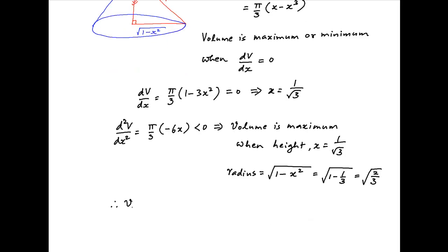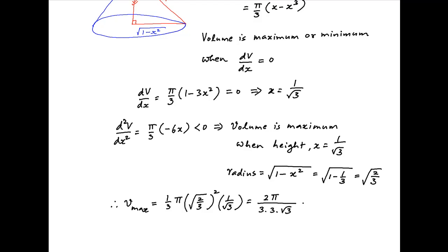Therefore the maximum volume of this cone is equal to 1/3 times π times (√(2/3))² times 1/√3. This simplifies to 2π divided by (3 times root 3), which can be rationalized to π√3 upon 27, which is the required answer.